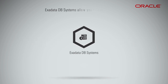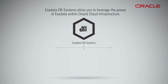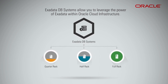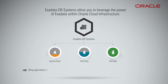Exadata DB systems allow you to leverage the power of Exadata within Oracle Cloud Infrastructure. Exadata DB systems are offered as quarter rack, half rack, or full rack of compute nodes and storage servers. With the power of Oracle Exadata, customers using this infrastructure are able to bring applications to the cloud never previously possible, without the cost of re-architecture and achieve incredible performance throughout the stack.